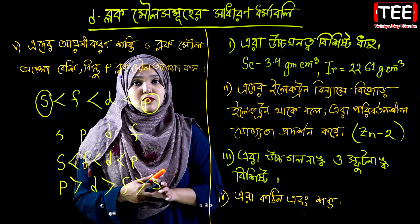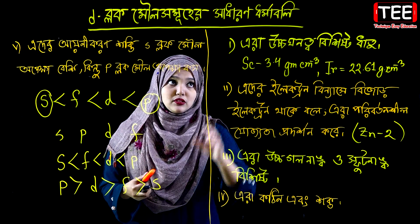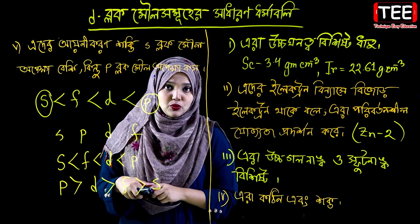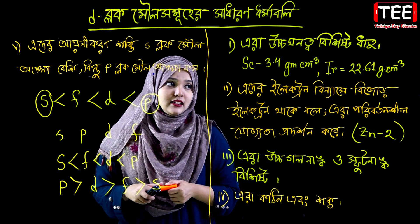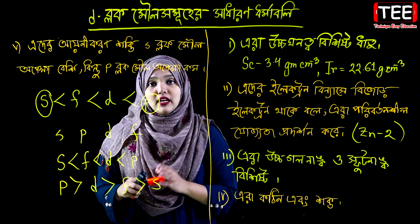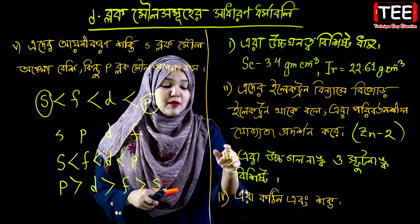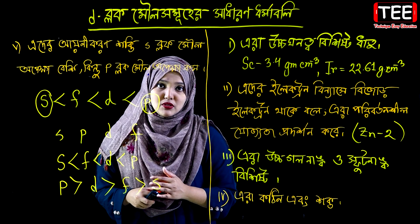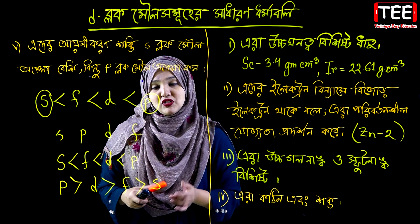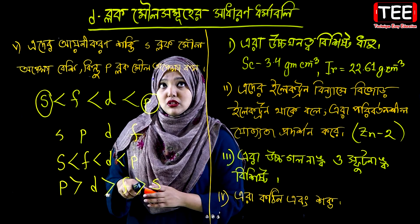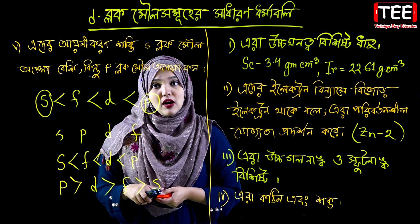So now we have D-block elements. The electrons in D-block will behave as electrons, and the electron configuration will be the same, but zinc will be the same exception. You can see that the ionization energy of D-block is higher than P-block but lower than S-block.